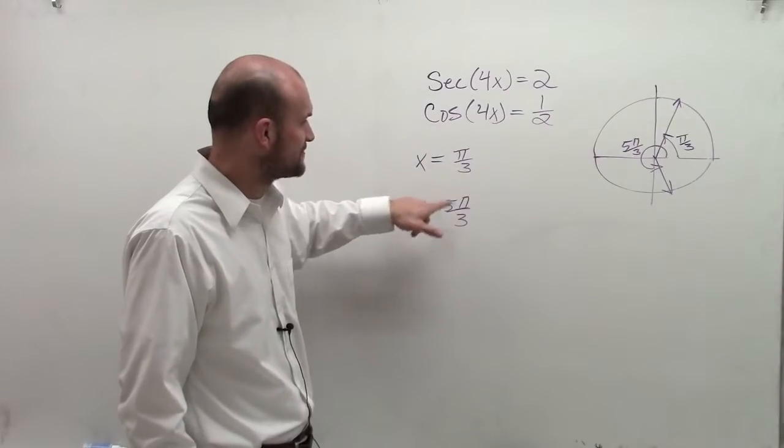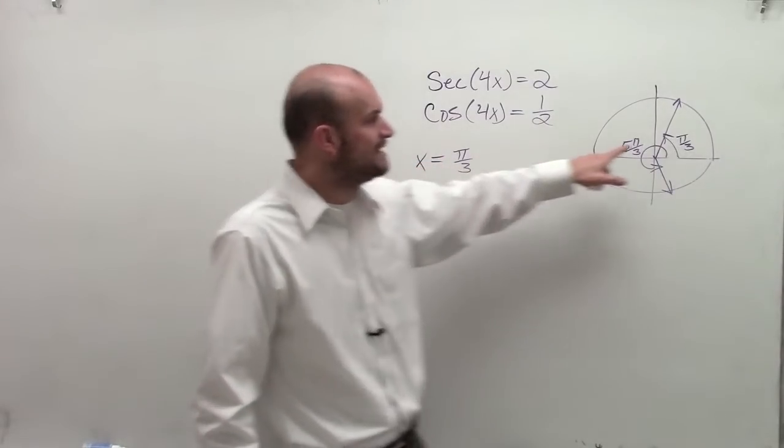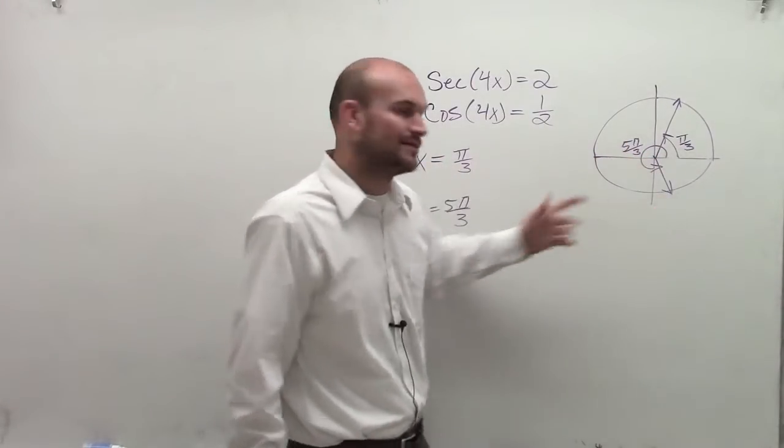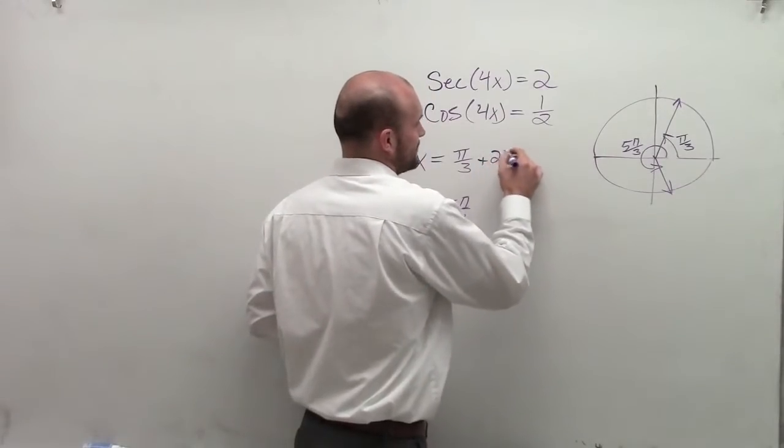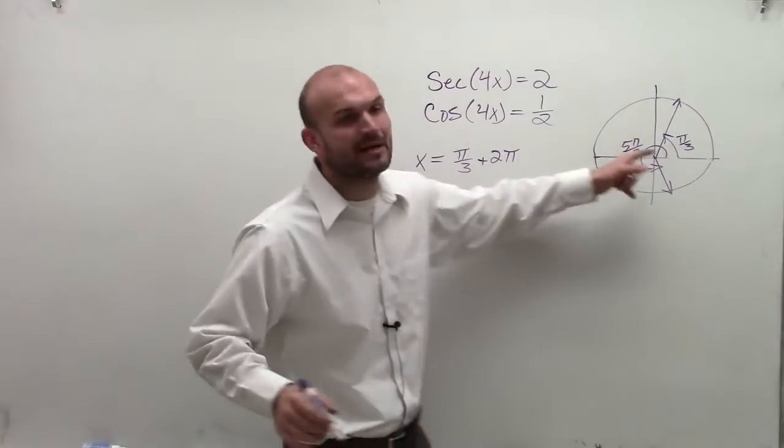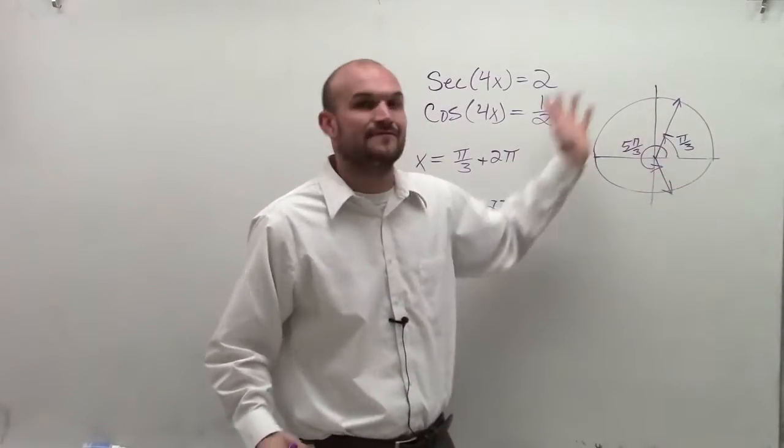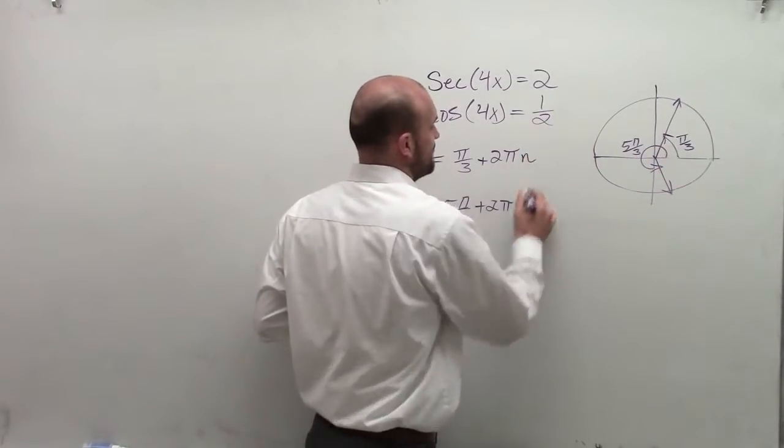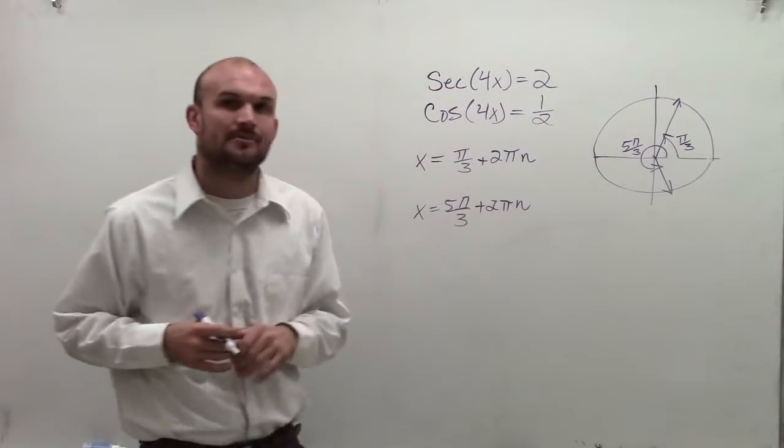So therefore, to find the values of x equals 5 pi over 3 and pi over 3, I need to keep on adding coterminal angles. So therefore, I'm going to add 2 pi plus 2 pi, and I can keep on doing that in the positive negative direction infinitely times. So we're going to use a variable to represent that infinite many times.